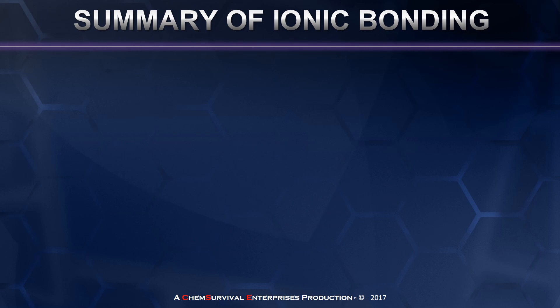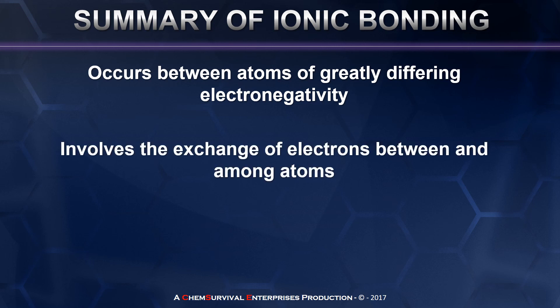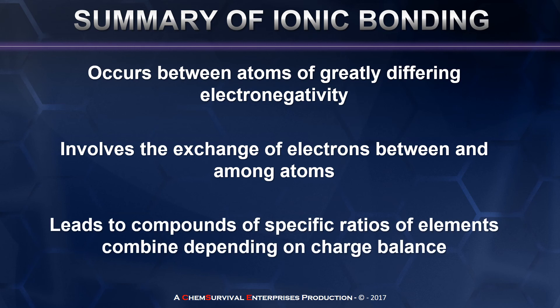So let's quickly summarize what we've discussed about ionic bonding in this video. First, we discussed how ionic bonding occurs between atoms of greatly differing electronegativity, usually more than two units of electronegativity. We discussed how it involves the full exchange of electrons between and among the atoms involved in the ionic compounds that they form. And finally, we took a look at how it leads to compounds that have specific ratios of elements that combine depending on the charge balance they must achieve in order to create a neutral compound. I'm Professor Davis from ChemSurvival.com and the YouTube channel ChemSurvival. Thanks for watching, and as always, I'll see you in my next video.